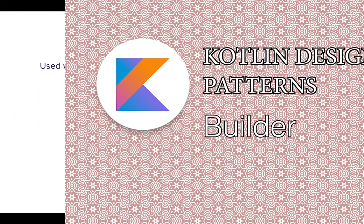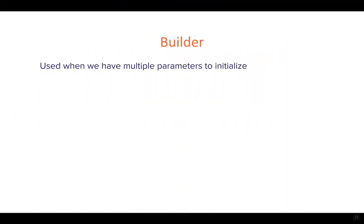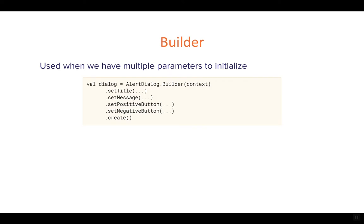In this video we're going to talk about the Builder pattern. You are definitely familiar with it if you've worked with Android development before. A builder is used when we have multiple parameters to initiate. It's used in the Android system quite extensively — for example, when building an AlertDialog, you use a builder object to set various properties. You don't have to set all the properties, just the ones you're interested in.